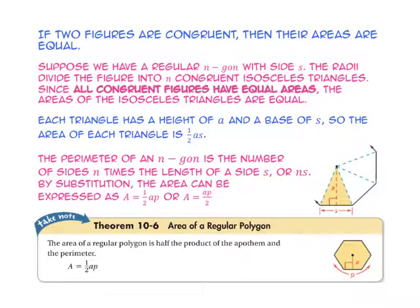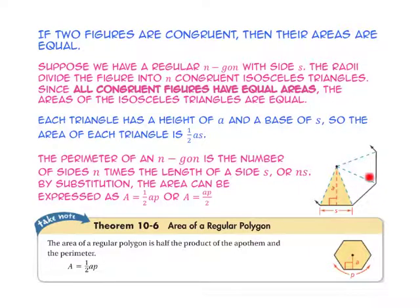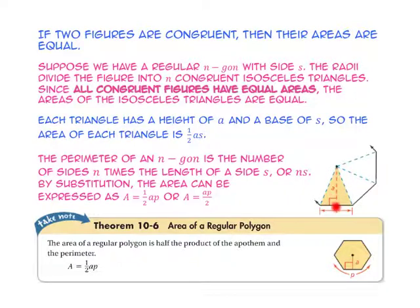If two figures are congruent, then their areas are equal. Suppose we have a regular N-gon with sides S. The radii divide the figure into N congruent isosceles triangles. Since all congruent figures have equal areas, the areas of the isosceles triangles are also equal. Looking at this isosceles triangle, you will notice that the height is A and the base is S, so the area of each one of these isosceles triangles will be one-half A times S.